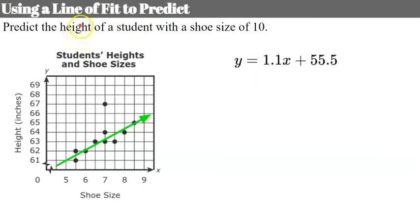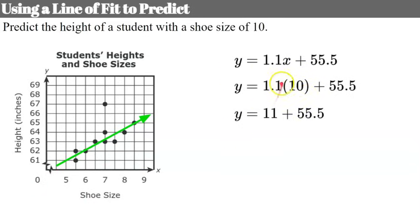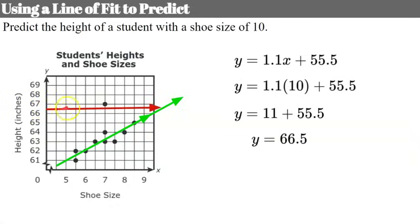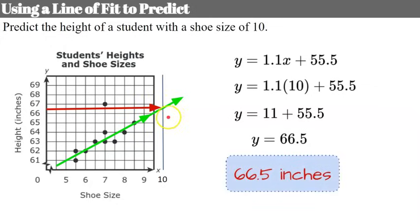Now we'll use our line of fit to predict the height of a student with a shoe size of 10. Shoe size is X, so we replace X with 10 and solve for Y: 1.1 times 10 is 11, plus 55.5 gives us 66.5 inches. Extending our trend line out to a shoe size of 10, we can confirm at a height of 66.5 inches. So we can predict that someone with a shoe size of 10 would have a height of 66.5 inches.